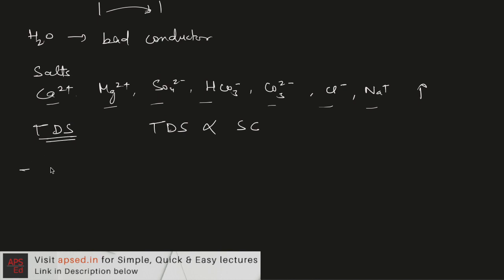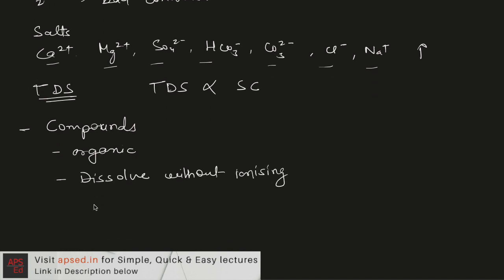But there is one problem in this correlation that there can be some compounds, generally the organic compounds that can dissolve in water without ionizing. That is some sugars can be there or even carbon dioxide is there. These type of compounds can dissolve and there will be no ionization. And because of that reason, the TDS if we measure with the help of specific conductance, it will be lower than the actual TDS. But we can still measure an approximate value.